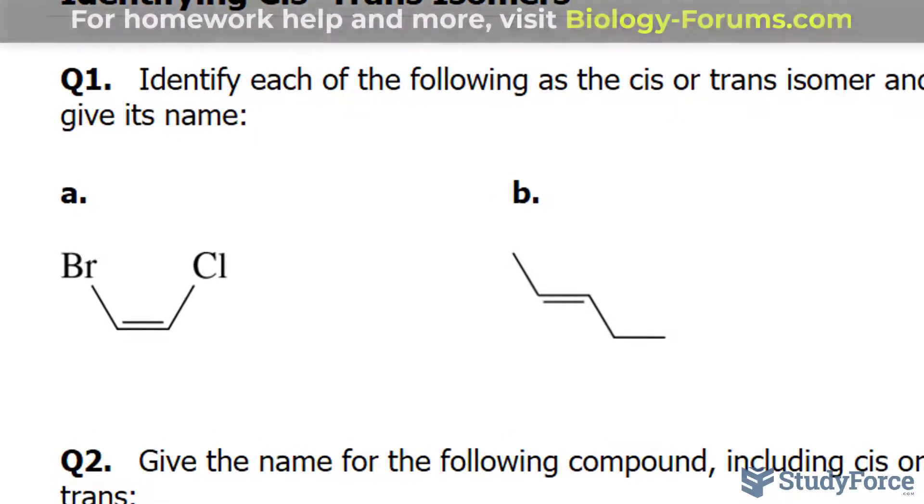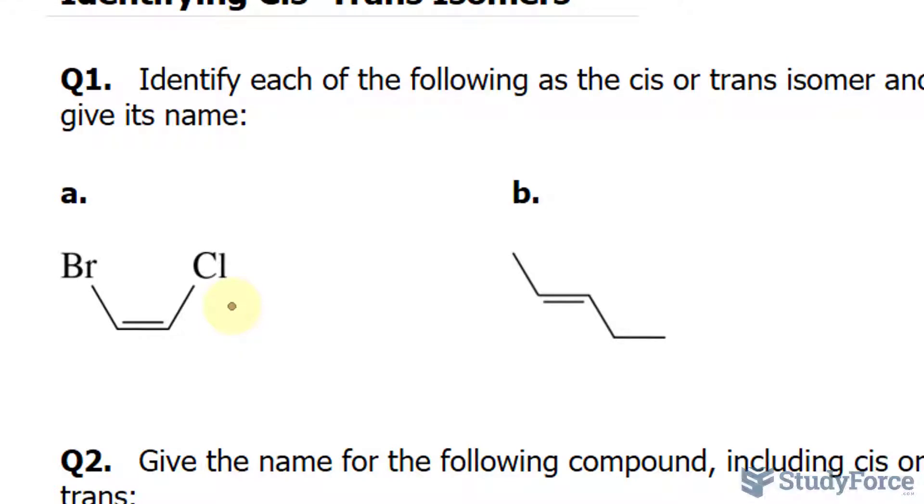Beginning with A, we have a double bond right in the middle here, and we have these two halogen groups that are attached to this double bond. Because both of these substituents are on the same side, this is a cis isomer.